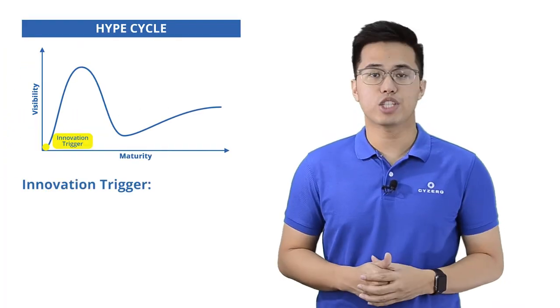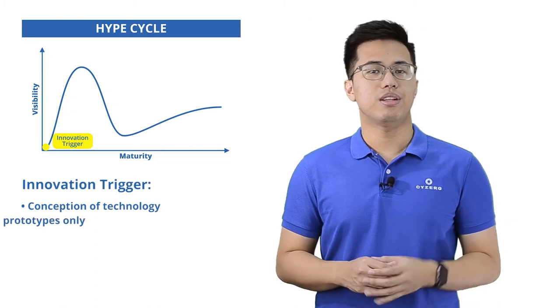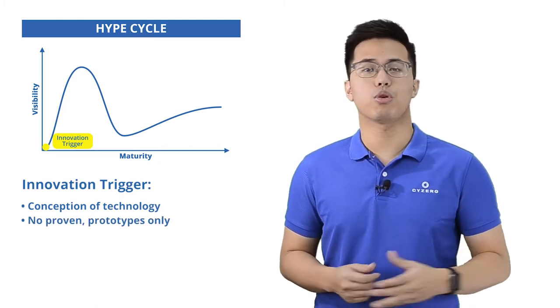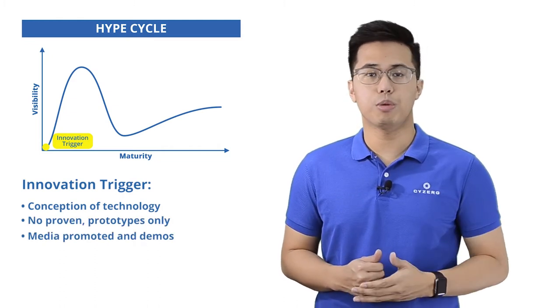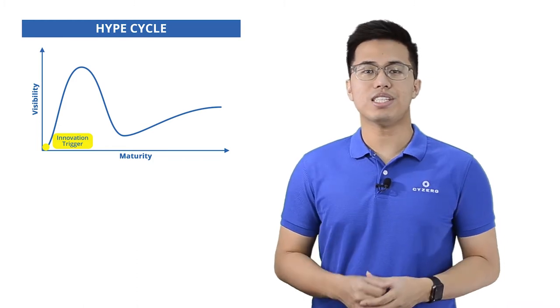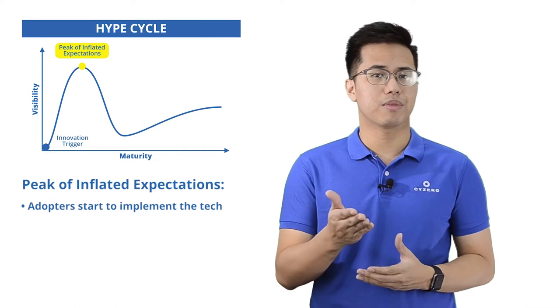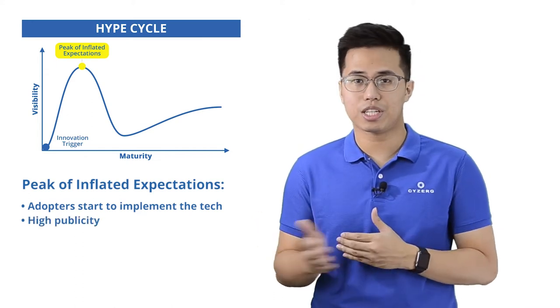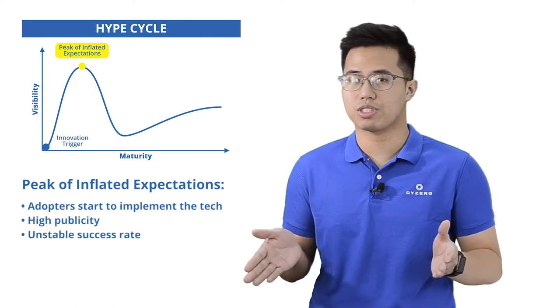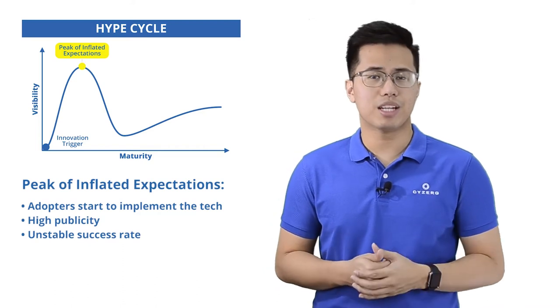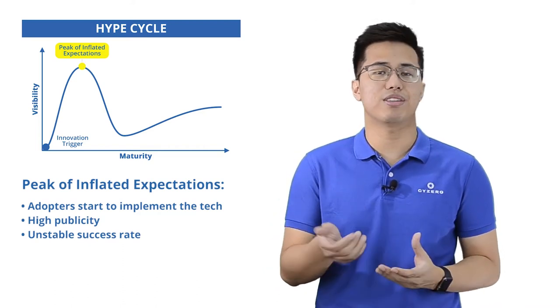The first phase is the innovation trigger, which is the conceptualization of technology. There is no proven market study and only prototypes exist. There's also media promotion and demonstrations. Second phase is the peak of inflated expectations. This is the time where the early adopter starts to implement it. There's a lot of publicity here, but technology is still unstable when it comes to success rate. There are many companies that embrace the innovation, but many others still don't.